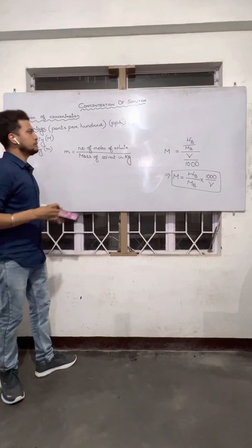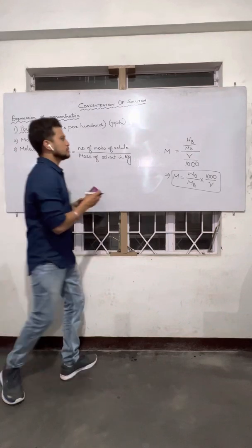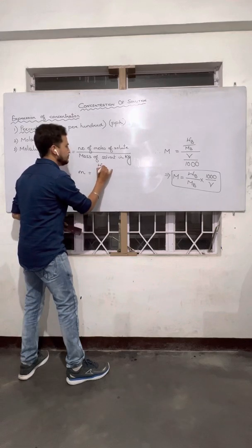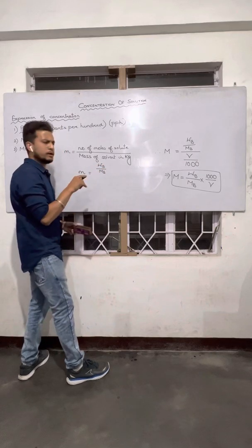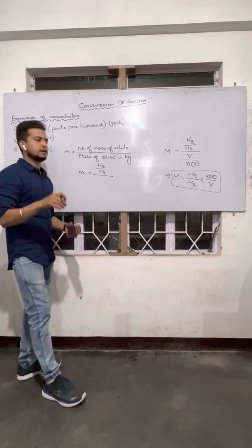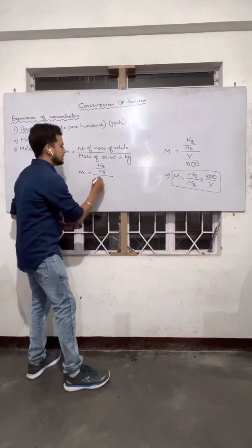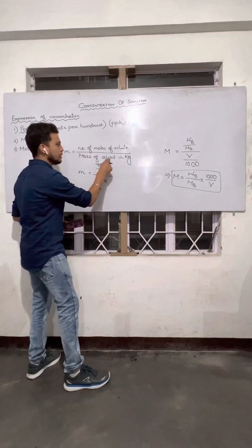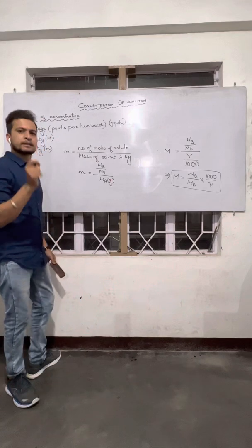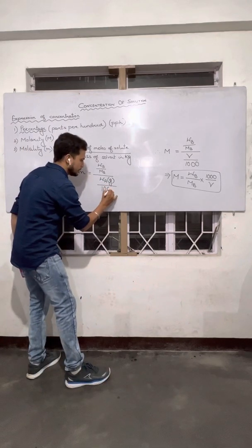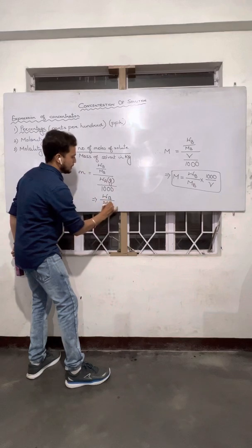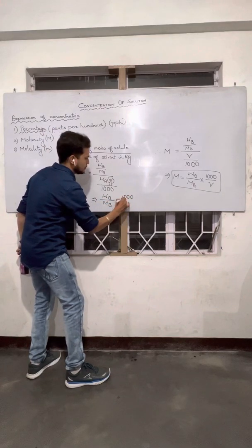In the same way, if I want to express molality in terms of moles: using the same notation, it will be Wb/Mb (mass of solute by molar mass) divided by mass of solvent. In most problems, they don't give mass of solvent in kg; they give it in grams. So if Wa is the mass of solvent in grams, we cannot express in grams according to the definition — we need kg. So we divide by 1000, giving: Molality = (Wb / Mb) × (1000 / Wa).